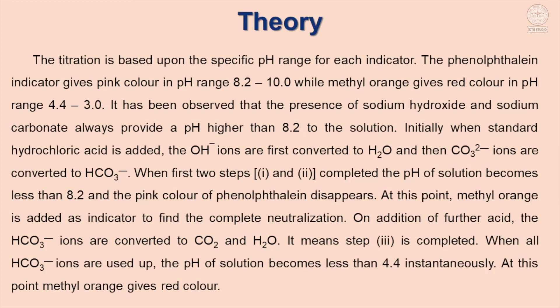Theory: titration is based upon the specific pH range for each indicator. Phenolphthalein indicator gives pink color in the pH range 8.2 to 10, while methyl orange gives red color in the pH range 3 to 4.4. It has been observed that the presence of sodium hydroxide and sodium carbonate always provides a pH higher than 8.2 to the solution.